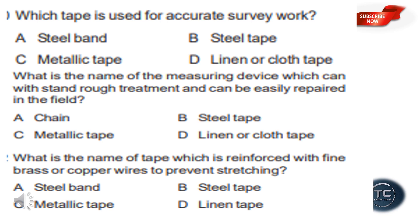What is the name of the tape which is reinforced with fine brass or copper wires to prevent stretching? We need to prevent stretching, so fine brass or copper wires are used to reinforce the tape. The answer is option C: metallic tape.